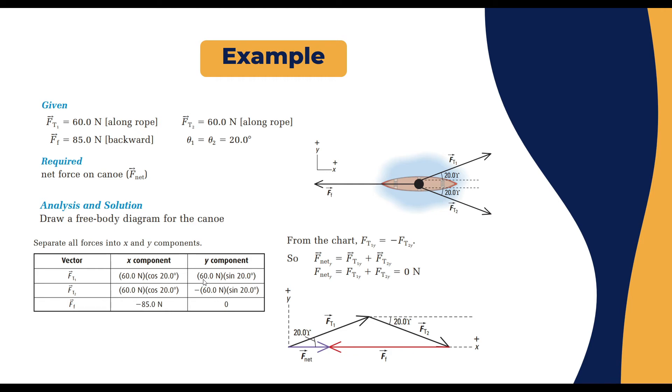So the y component is 60 sine 20. The F₂ x component is 60 cosine 20. The y component is minus 60 multiplied by sine 20 because if you analyze this it will have one vector going to the right, one vector going downward which is the y vector or the y component.